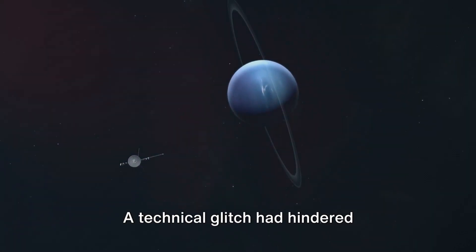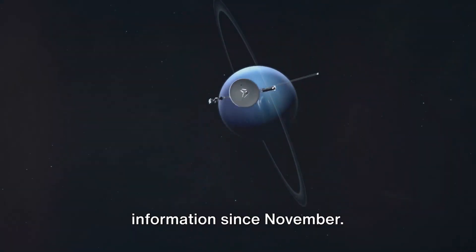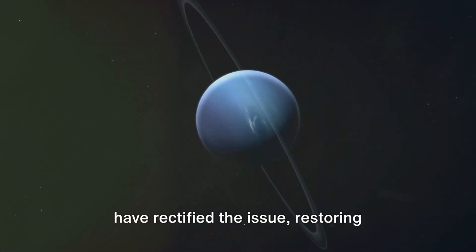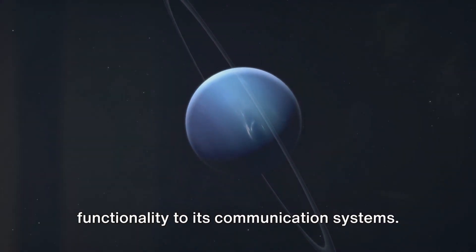A technical glitch had hindered Voyager 1's ability to relay coherent information since November. However, diligent efforts by engineers have rectified the issue, restoring functionality to its communication systems.